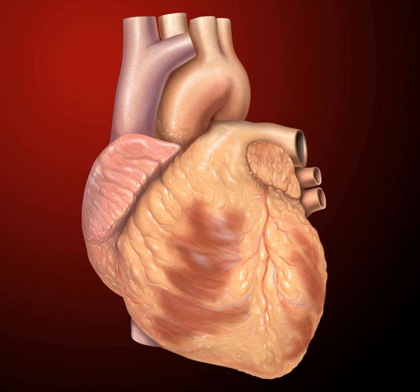Severe narrowings may cause chest pain or breathlessness during exercise or even at rest. The thin covering of an atherosclerotic plaque can rupture, exposing the fatty center to the circulating blood. In this case a clot or thrombus can form, blocking the artery and restricting blood flow to an area of heart muscle, causing a myocardial infarction or unstable angina. In the worst case this may cause cardiac arrest, a sudden and utter loss of output from the heart.